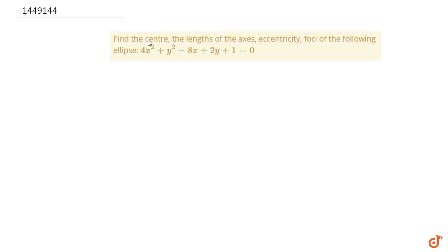Hello friends. In this video we have been asked to find the center, the length of the axes, eccentricity, and foci of the following ellipse: 4x² + y² - 8x + 2y + 1 = 0.